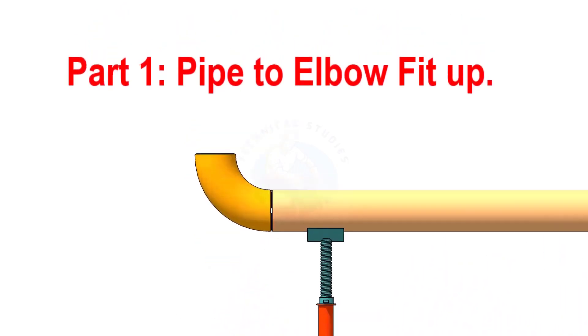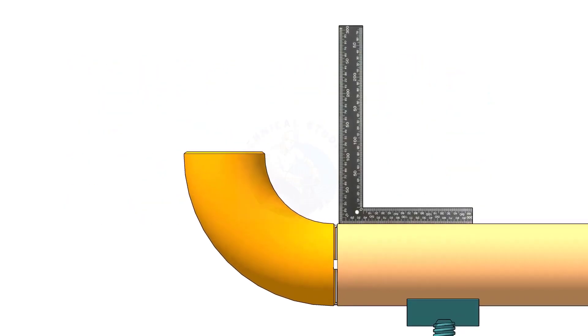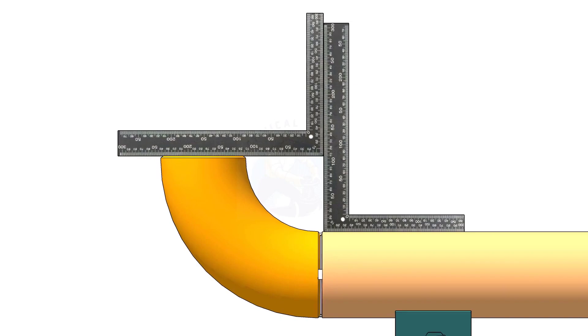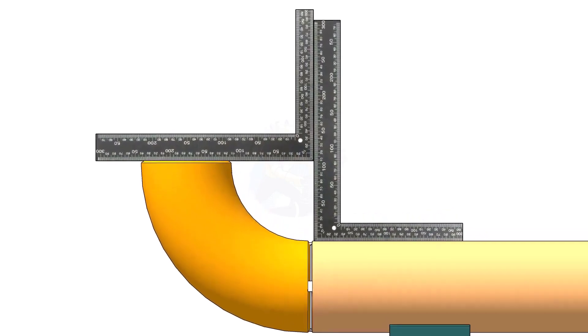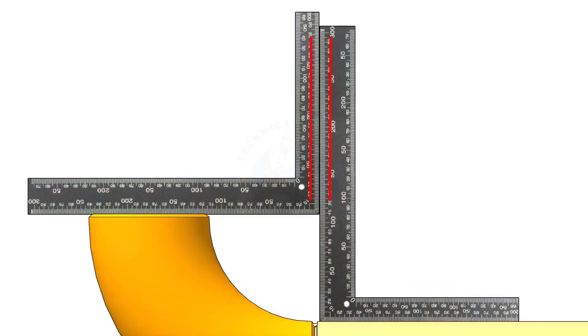There are different methods to check the fit up of an elbow to a pipe. One method is hold right angles on the pipe and on the elbow and check the gap. If the right angles are parallel, the fit up is correct.